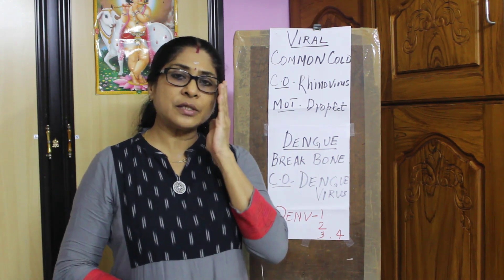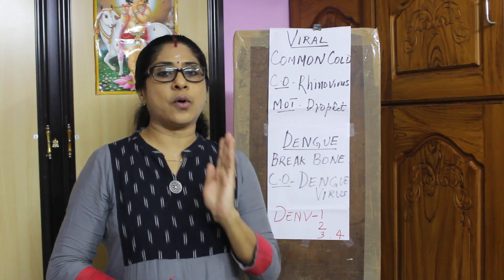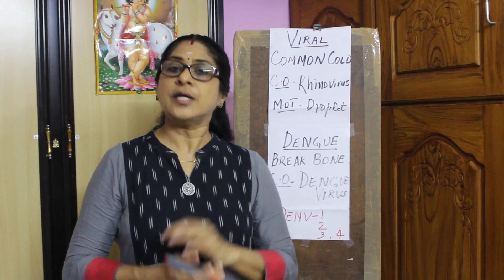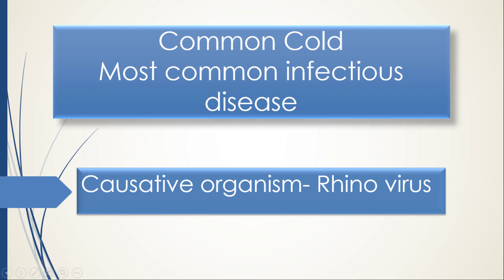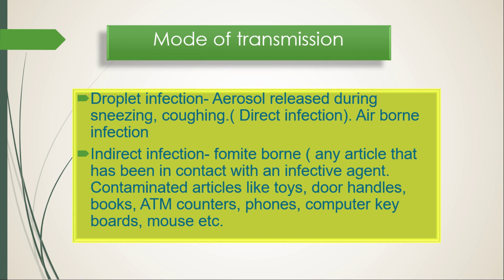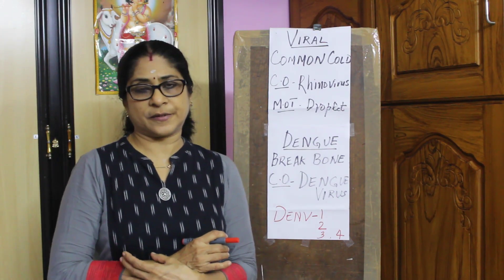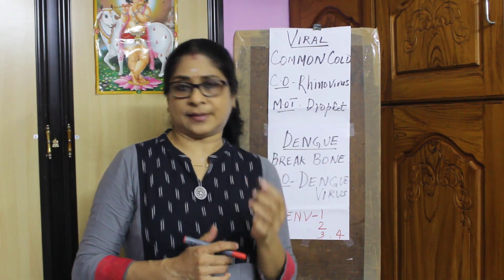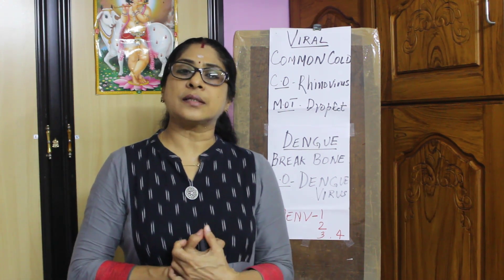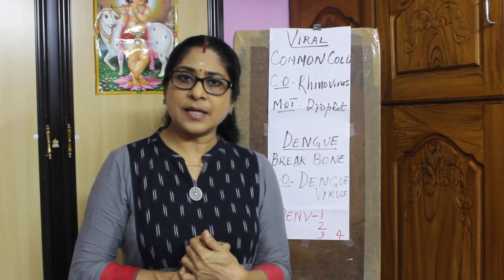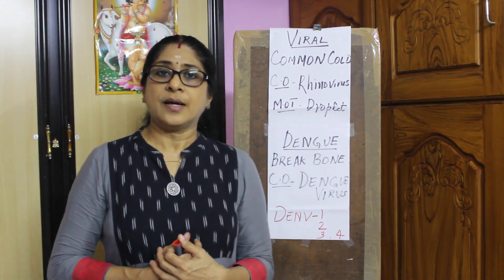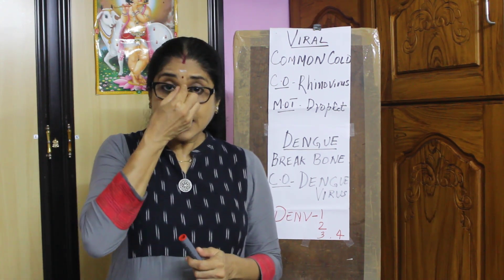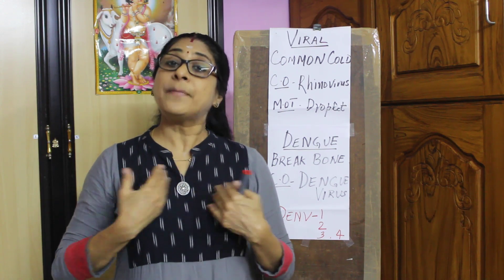Such a method of transmission is known as fomite-borne infection. So aerosol-borne infection, airborne infection, and fomite-borne infection are the three methods by which this disease is transmitted from one person to another. The incubation period is one to two days after infection before the patient starts showing symptoms. The symptoms are typically in the nasal tract as well as the respiratory tract, but never in the lungs.